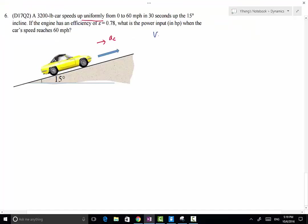So when the car has a speed of 60 miles per hour, we can do a unit conversion and that equals 88 foot per second.